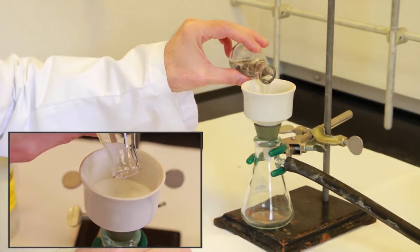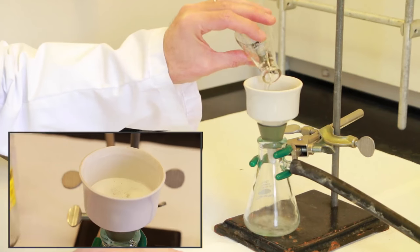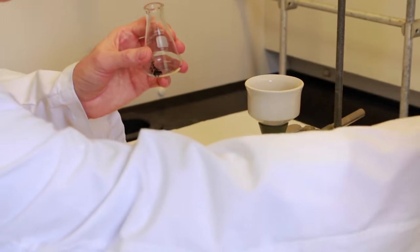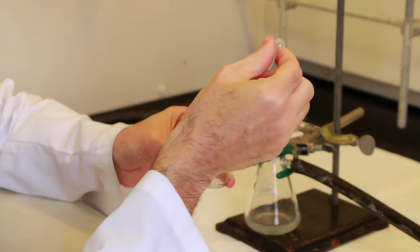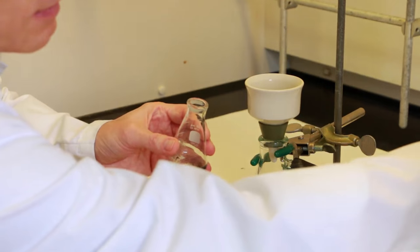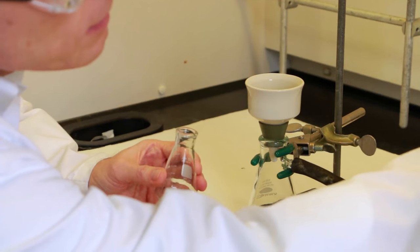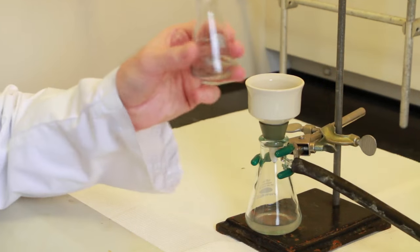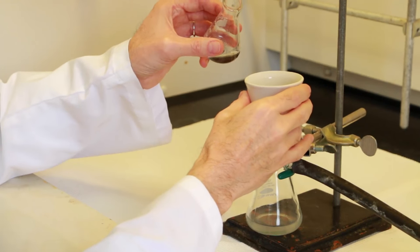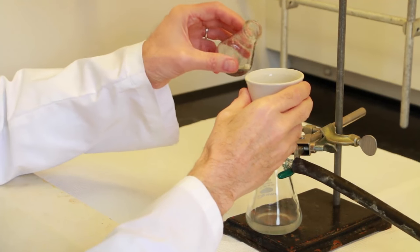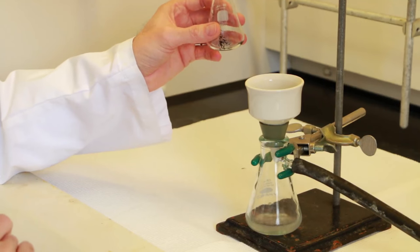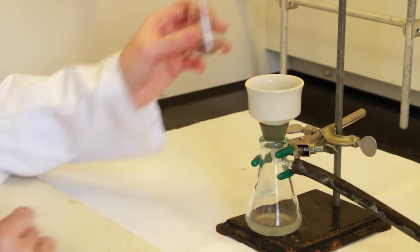Then you can filter as usual. You may want to rinse your flask with some of the solvent and rinse the celite as well to make sure that none of the product is trapped in the celite bed. Then you add that solvent to your solution.